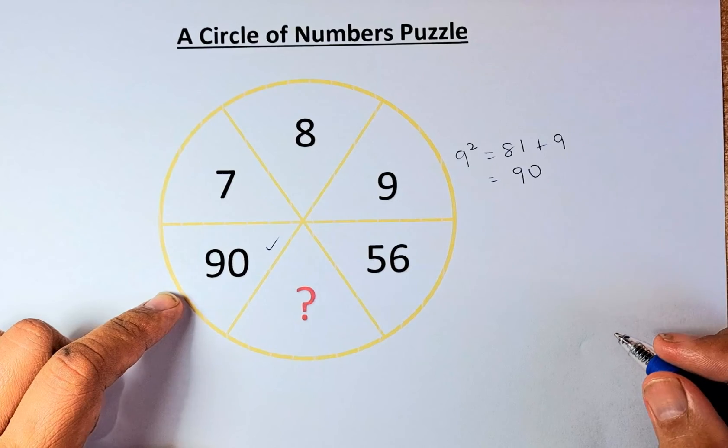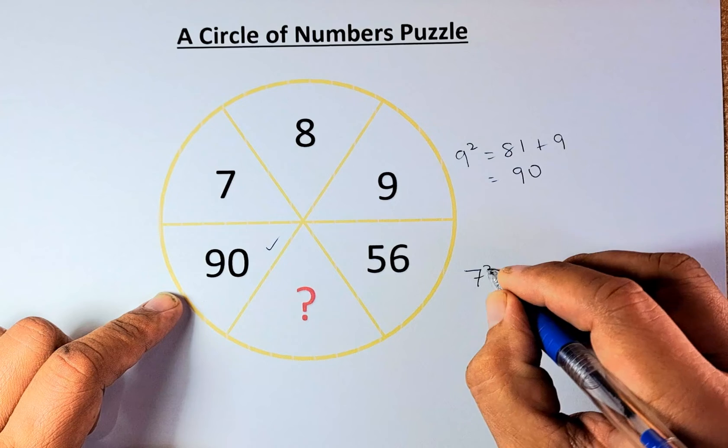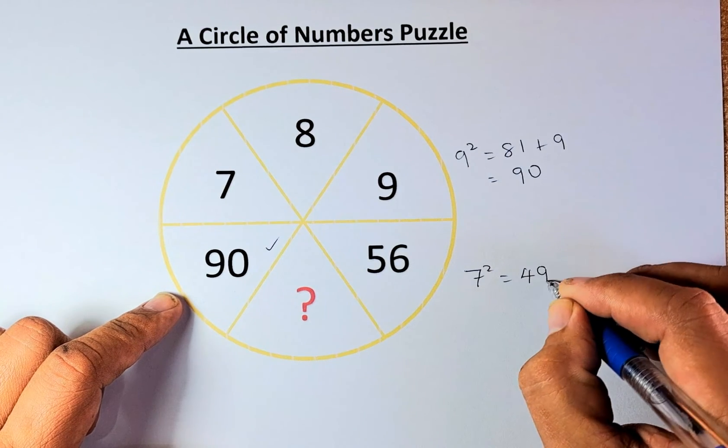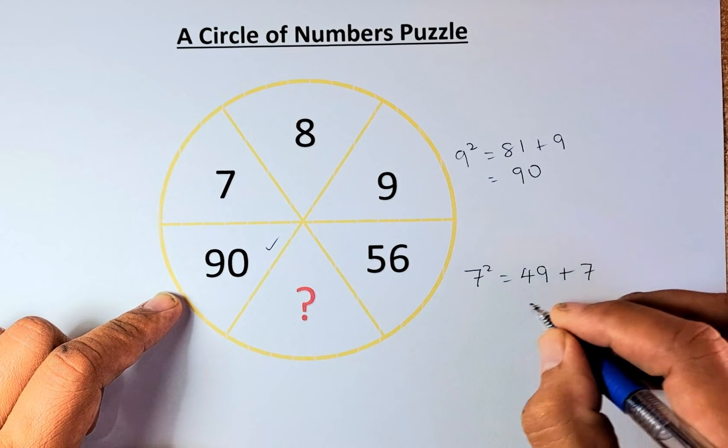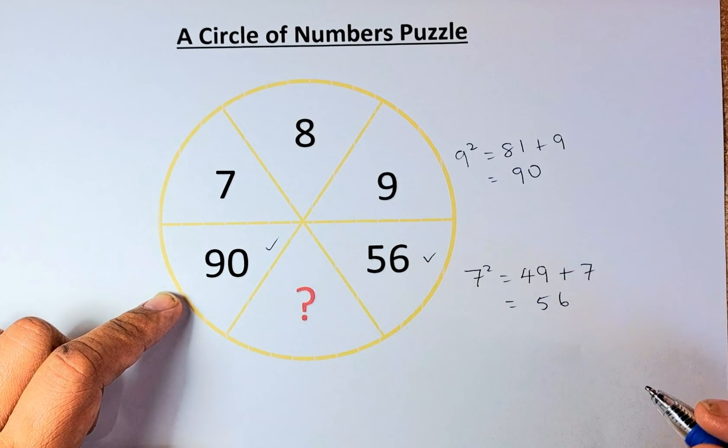That's how we get the number. So for 7 and 56 is the same. So 7 squared is going to be 49, 49 plus 7. So 49 plus 7 gives us 56, and that is how we get 56.